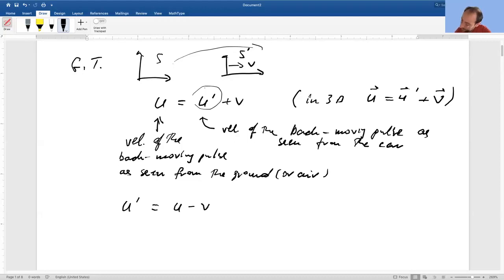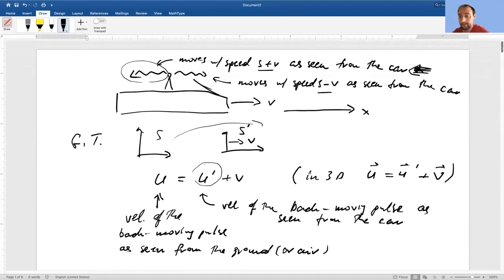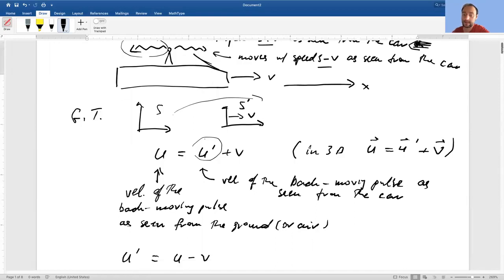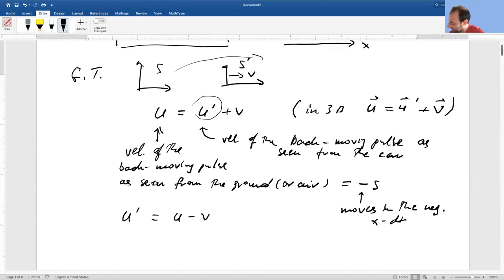So what we want is this? So U prime equals U minus V. Now, U is the velocity of the back moving pulse as seen from the ground or air. What is it? It's minus S. Minus because it's moving to the left in the negative X direction. And S because S is the speed of sound, 340 meters per second. It's defined to be a positive one. Equals minus S. So the minus moves in the negative X direction. So therefore, the velocity of the back moving pulse as seen from the car equals minus S minus V.